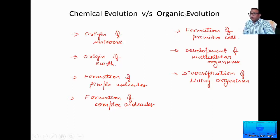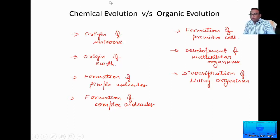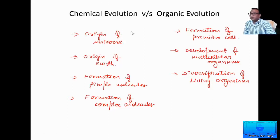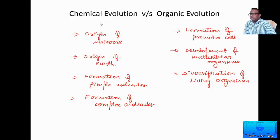How initially the simple molecules formed on earth is part of chemical evolution. So these are the two types of evolution one can come across: chemical evolution, which covers origin of the universe and formation of simple molecules, and organic evolution, which covers origin and diversification of life.